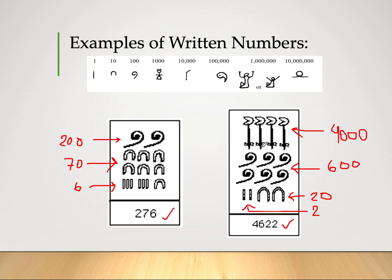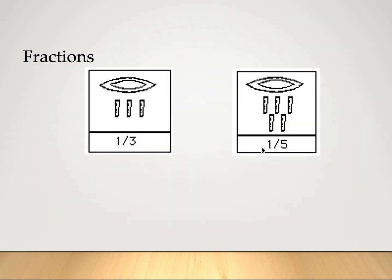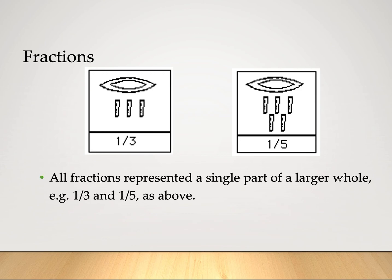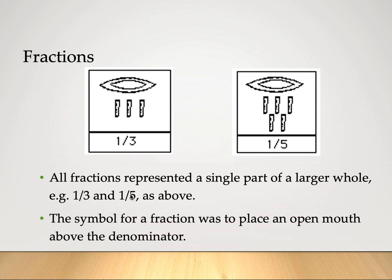Now let's look at how Egyptians write fractions. In Egypt, all fractions represented a single part of a larger whole — that is, only unit fractions. For example, one-third and one-fifth as written above. The symbol for a fraction was to place an open mouth above the denominator. So you see what looks like lips — the open mouth — placed above the denominator. For example, one-third has the open mouth above three, and one-fifth above five.